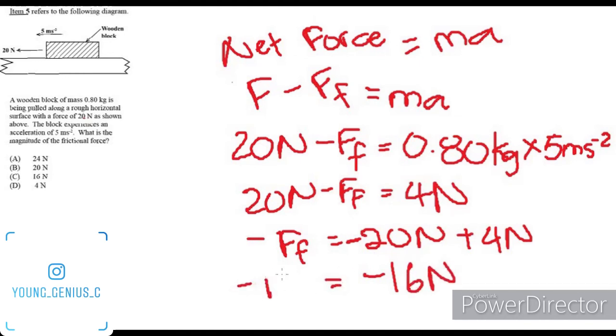So the frictional force would be 16 newtons. The answer would be C. That's because the negative sign only tells us that it's in the opposite direction, because force is a vector quantity. That's it.